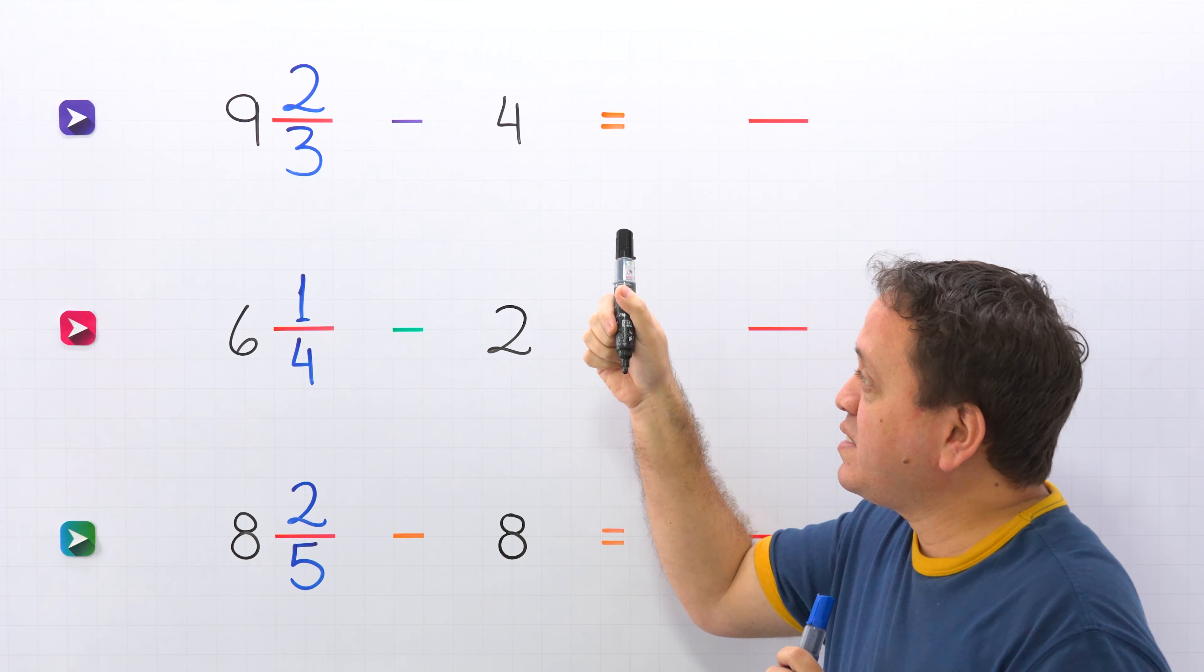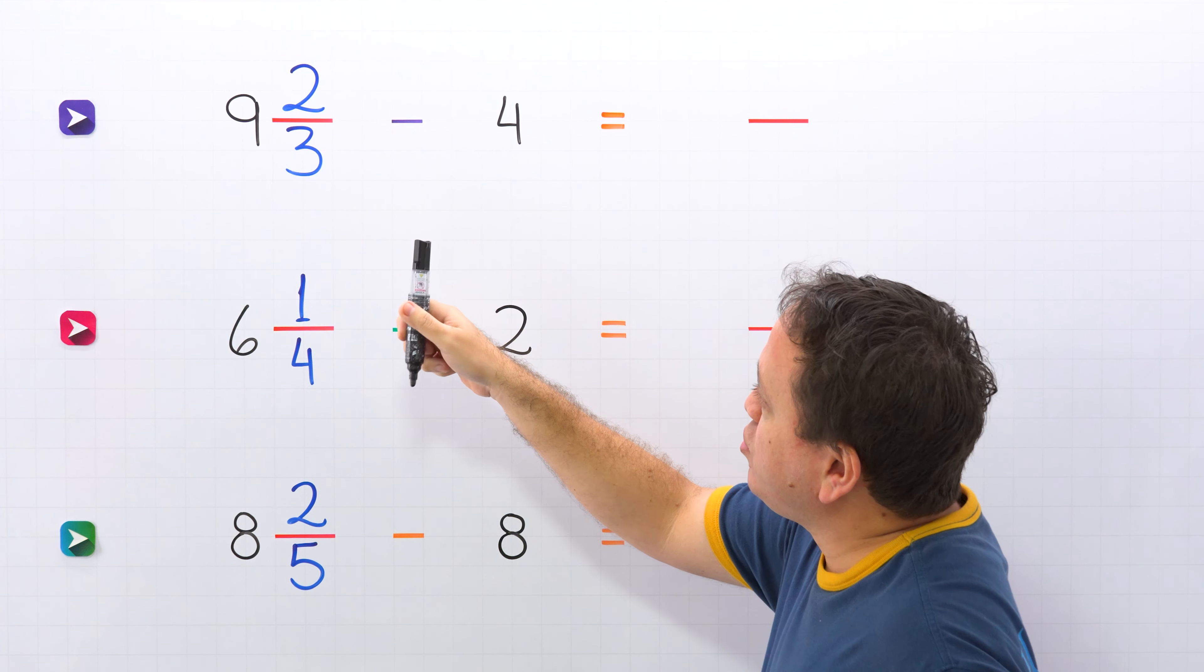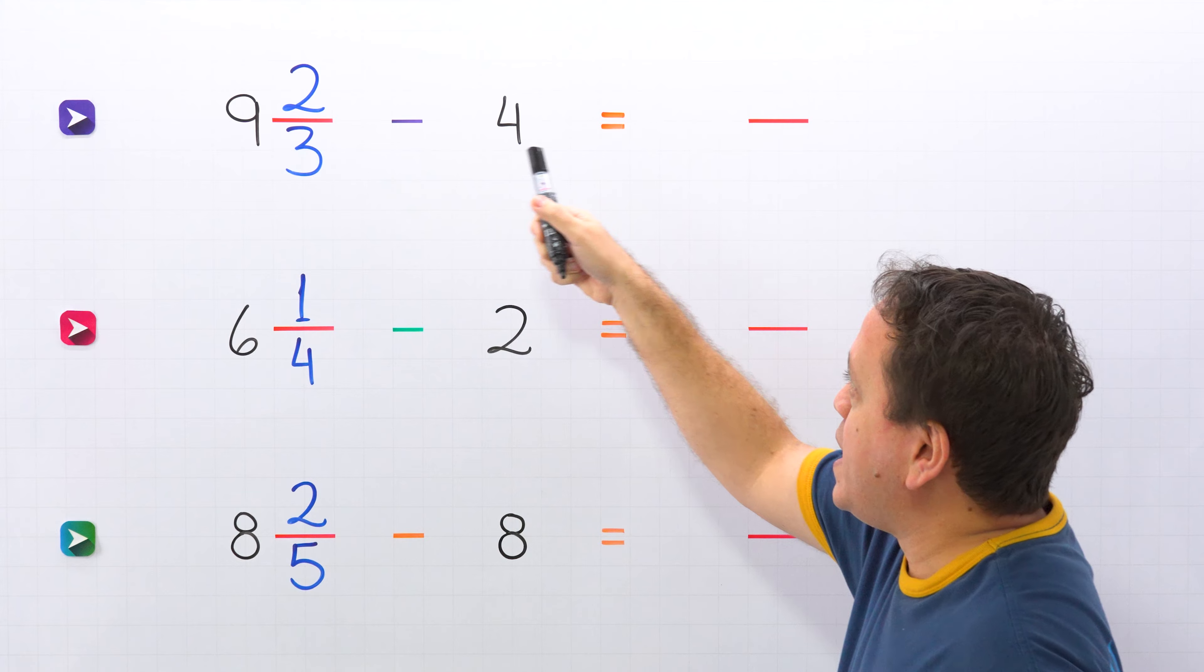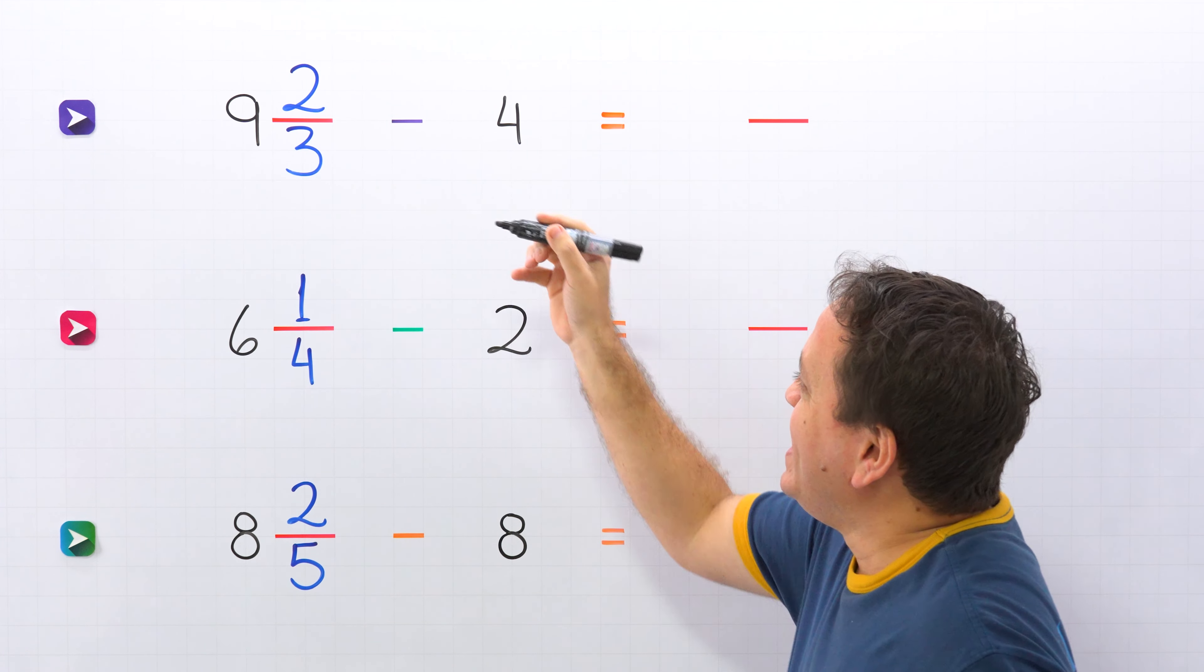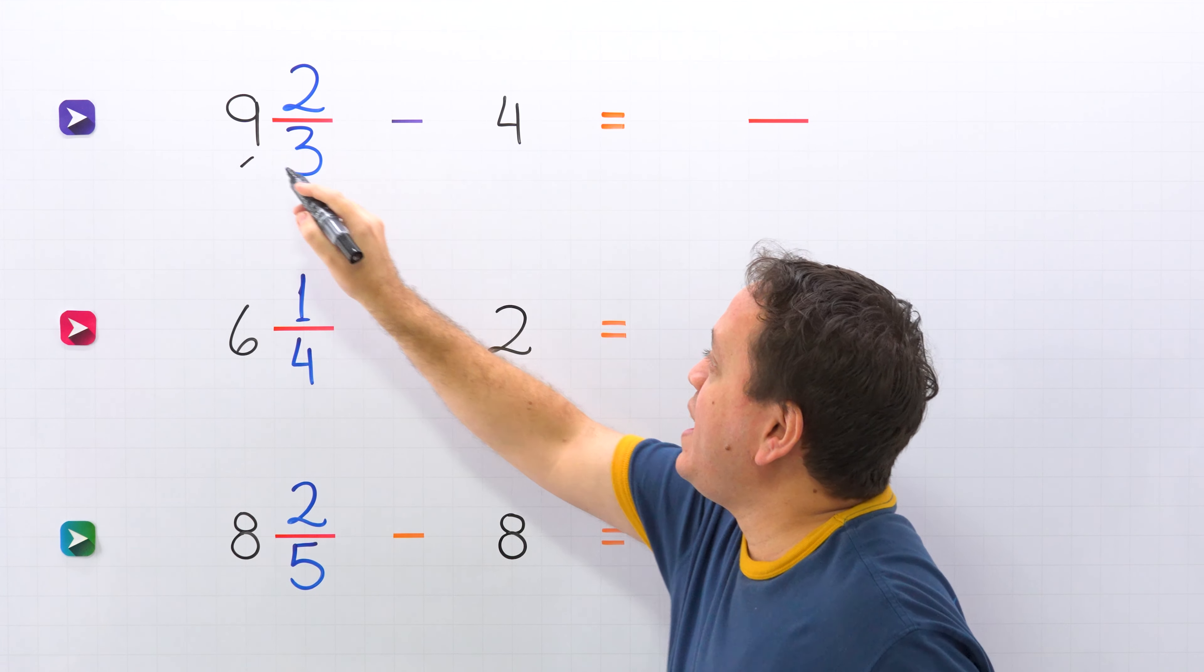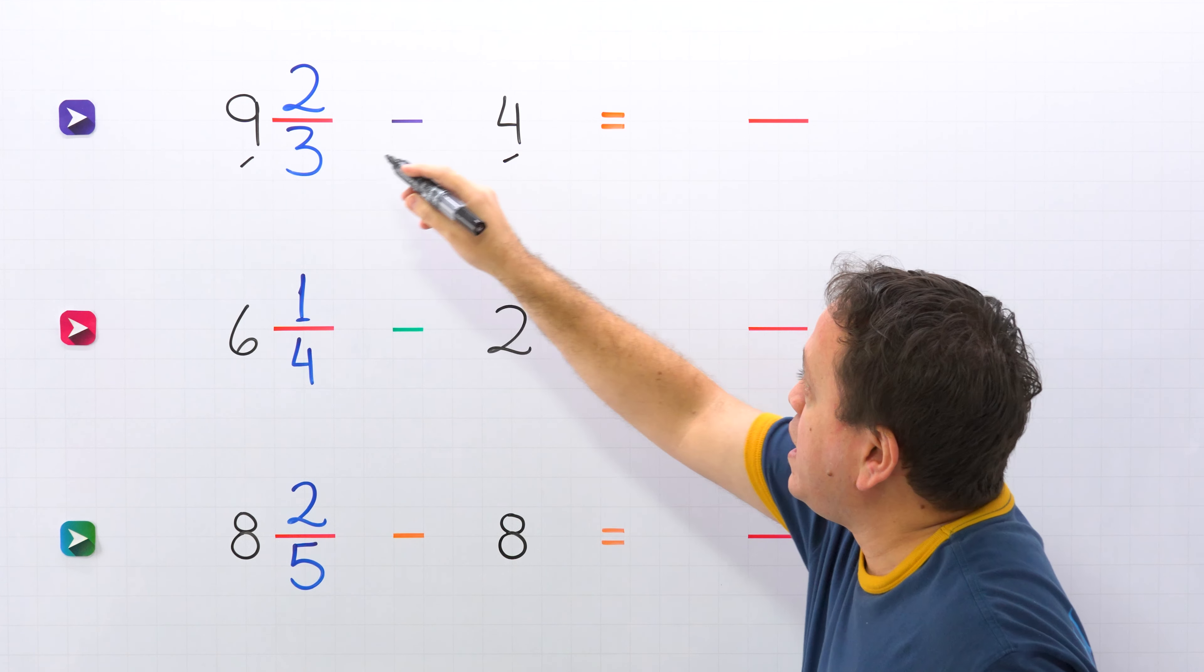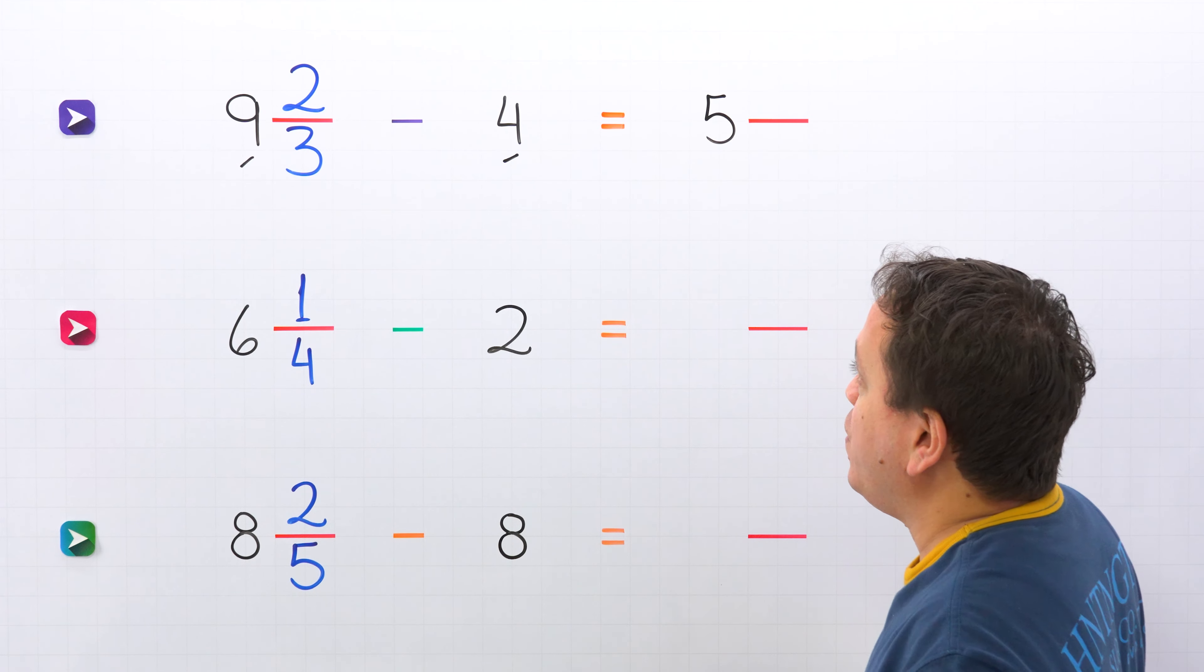Nice! Now we are ready for the first example. In this example we are going to subtract nine and two thirds minus four. To find the difference we start by subtracting the whole numbers. In this case the whole numbers are nine and four. So nine minus four gives us five. Perfect!